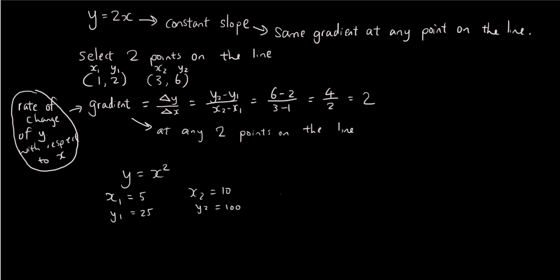The gradient is equal to y2 minus y1 over x2 minus x1, which is 100 minus 25 over 10 minus 5, which is 75 over 5, which is 15.